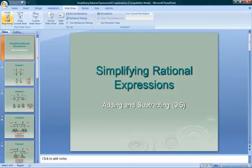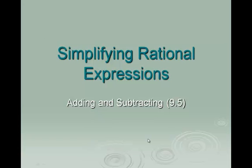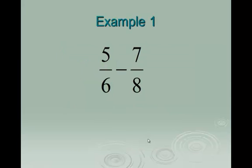Today we're going to be learning about simplifying rational expressions with addition and subtraction. This is section 9.5 in the Algebra 2 book and deals with adding and subtracting fractions. When you're adding and subtracting fractions, you have to start by finding a common denominator. This is a concept that you learned about in middle school. We're going to take this a step further, working with more complicated fractions, but first we're going to start with something you should already remember how to do.